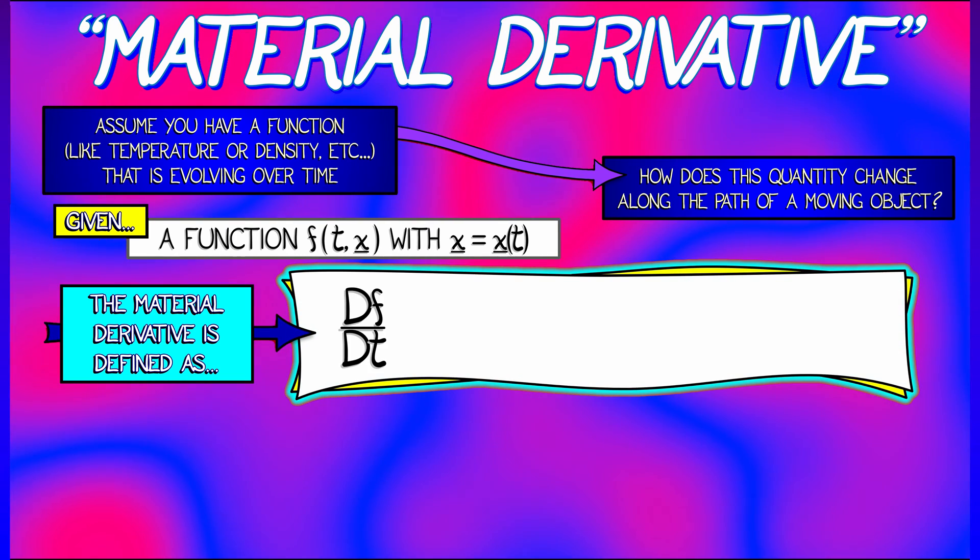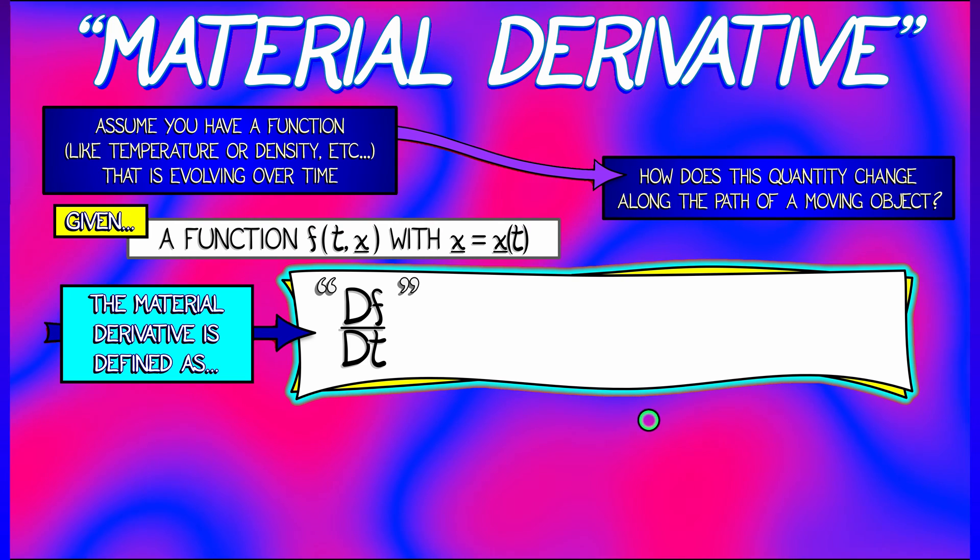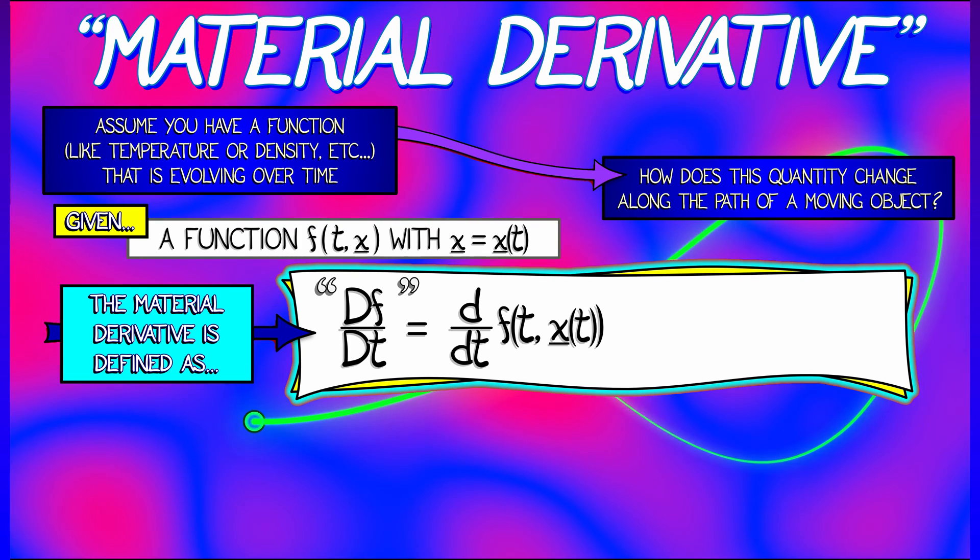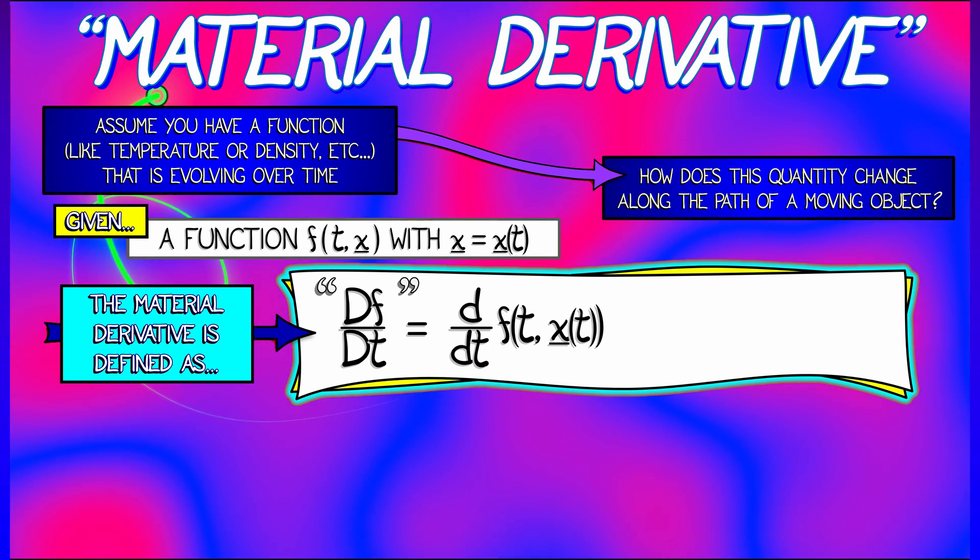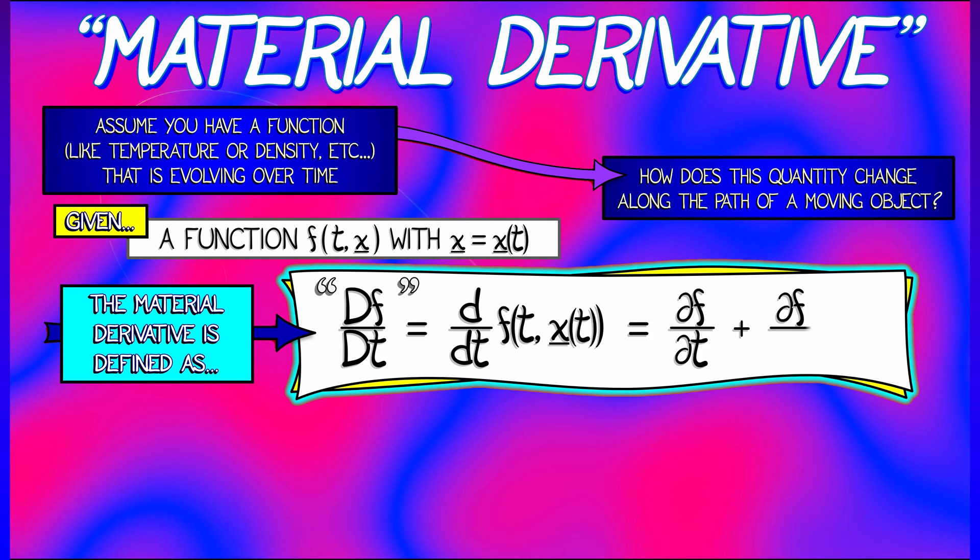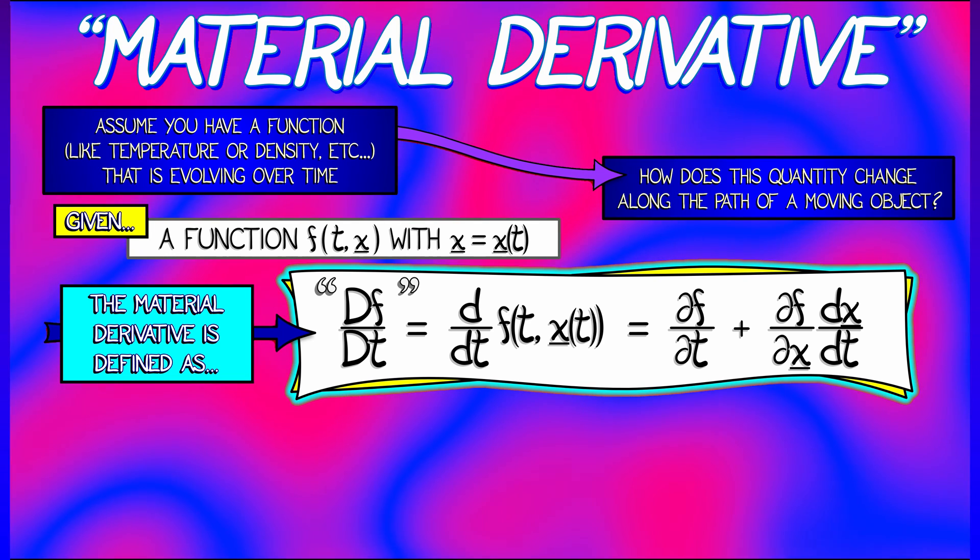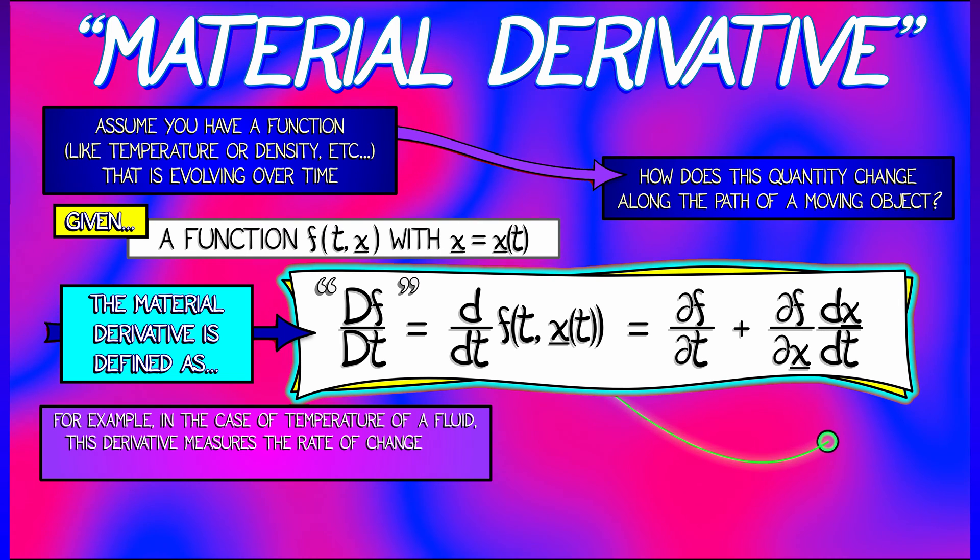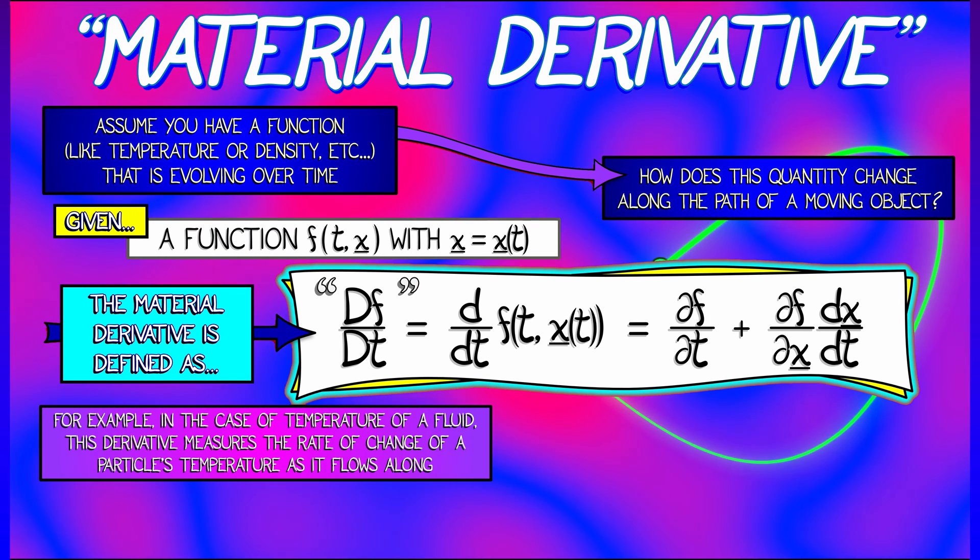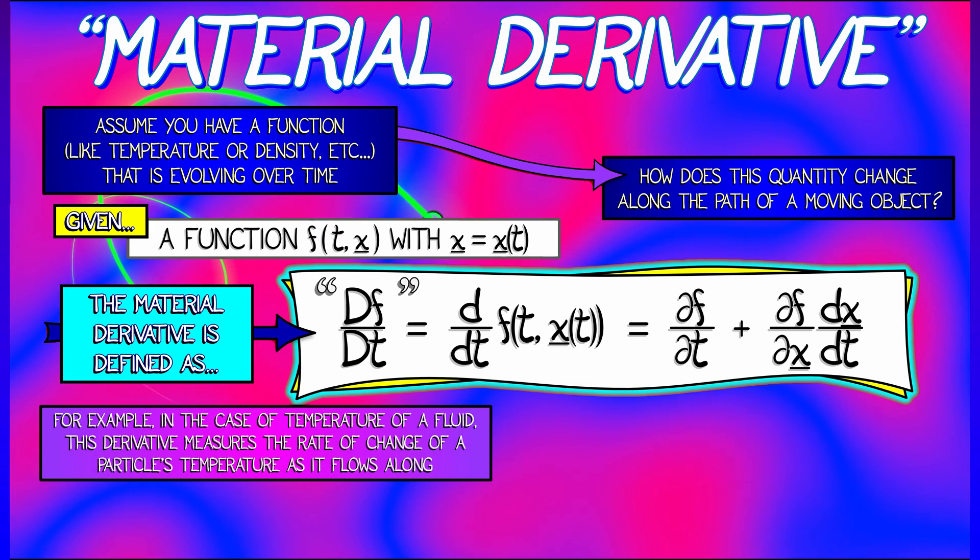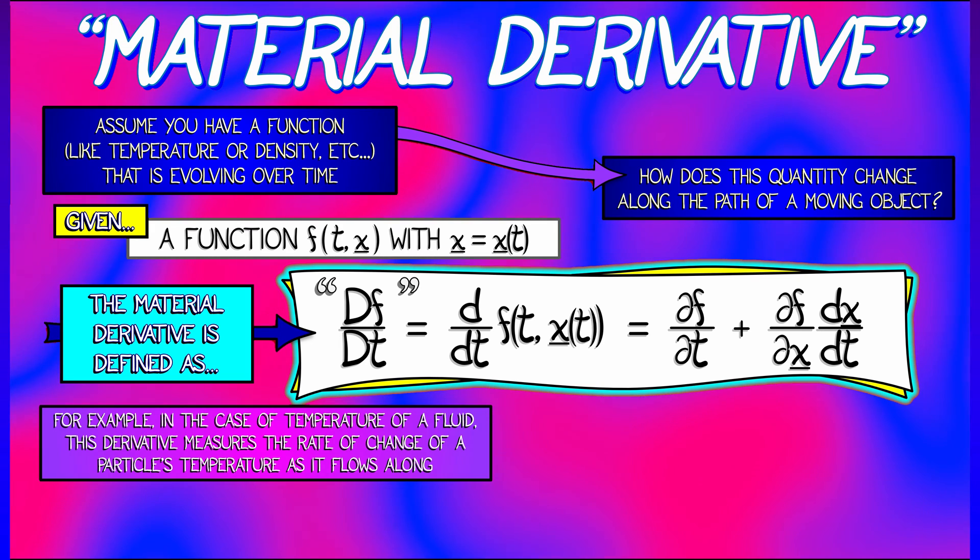Then the material derivative is defined as follows. It's usually called Df/Dt with a big capital D. That's kind of weird, I know, but that's the notation that's used. It's really just the time derivative of f at t comma x of t. You substitute in that particle's path. Now, this can be expressed as ∂f/∂t plus ∂f/∂x times dx/dt. We're going to unpack that formula in just a minute. But it's helpful to think of a specific example, something like temperature of a fluid. And then this derivative measures the rate of change of that particle's temperature as it flows along the path.